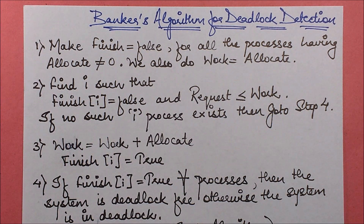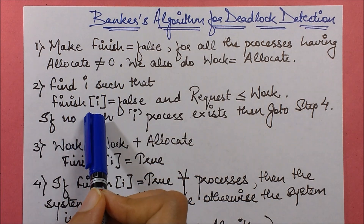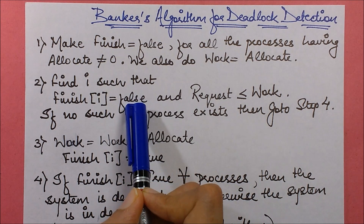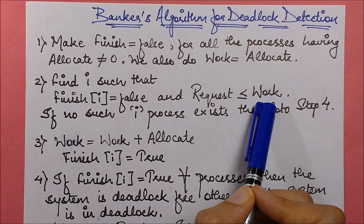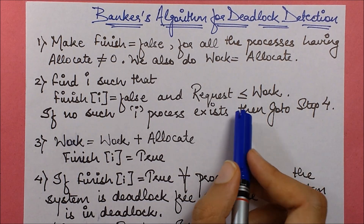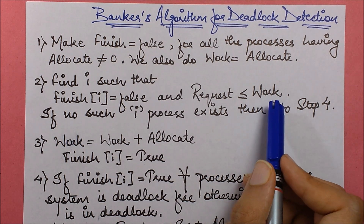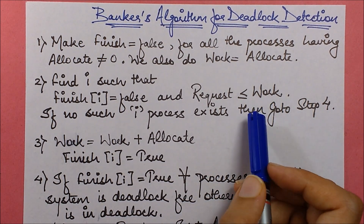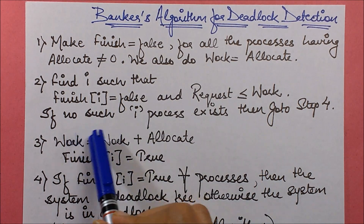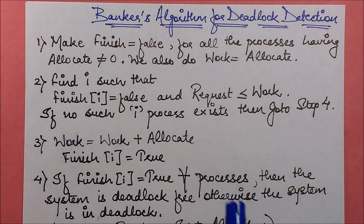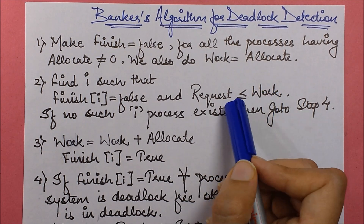Next, find i such that finish[i] equals to false and request is less than or equals to work. This means find a process whose finish flag is set to false — that means it has not been processed yet — and whose request is less than or equals to work, where work represents the available resources. If request is less than or equals to available, that process can proceed.